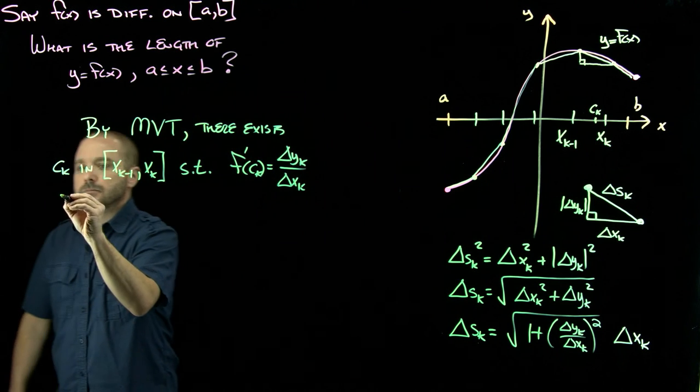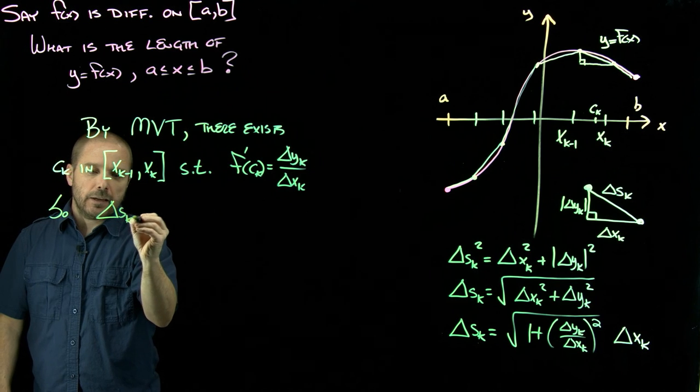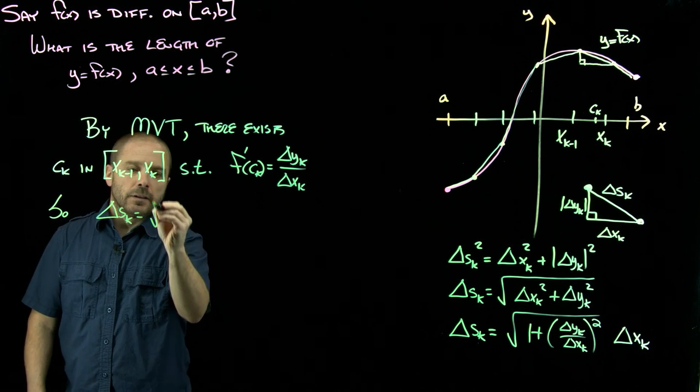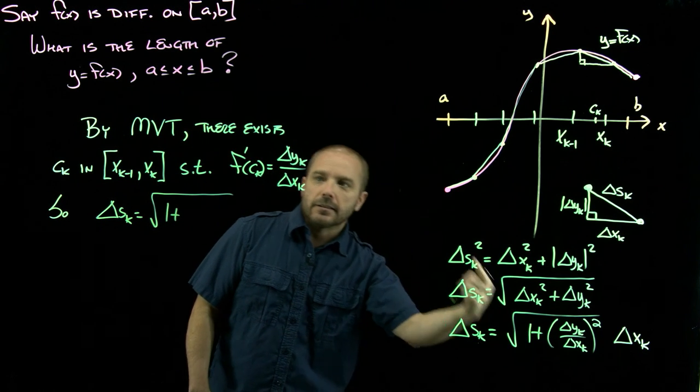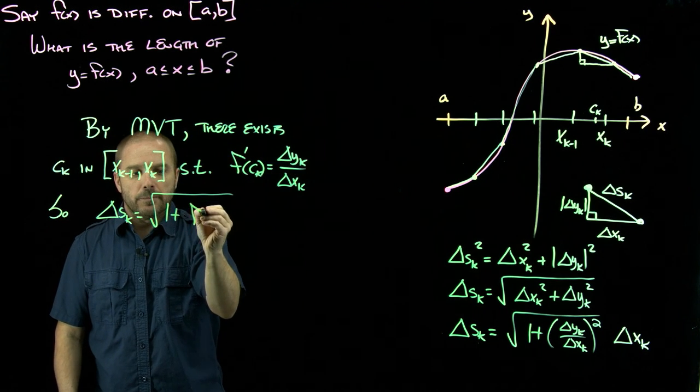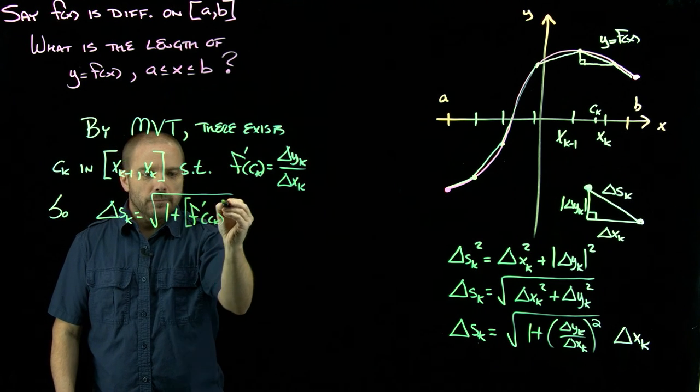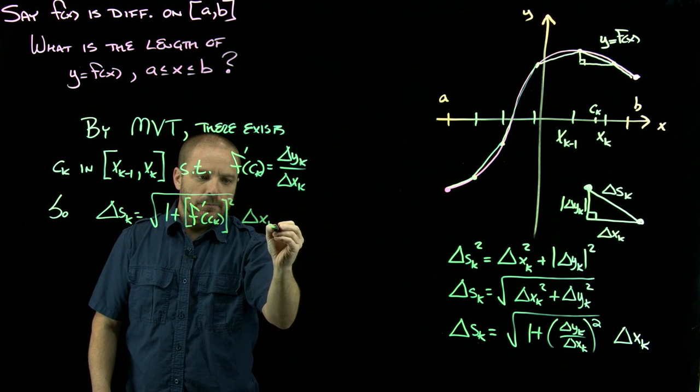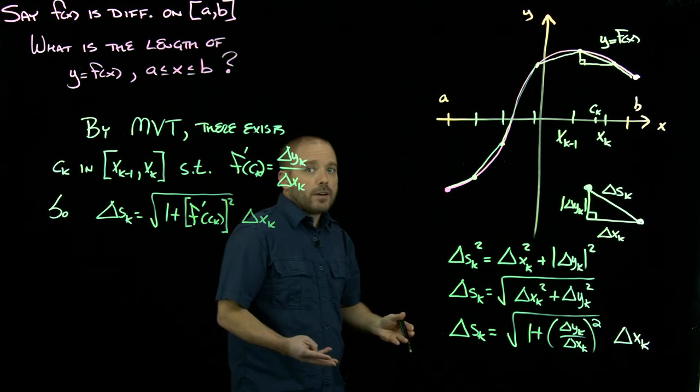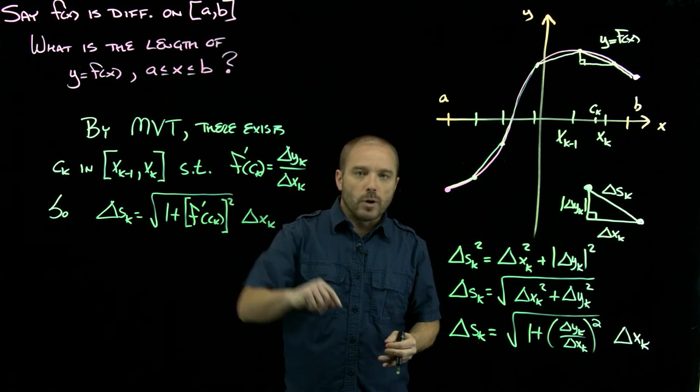That tells us that delta s sub k could be written as the square root of one plus, replace that with the derivative, and now we have something that looks like the form in a Riemann sum.